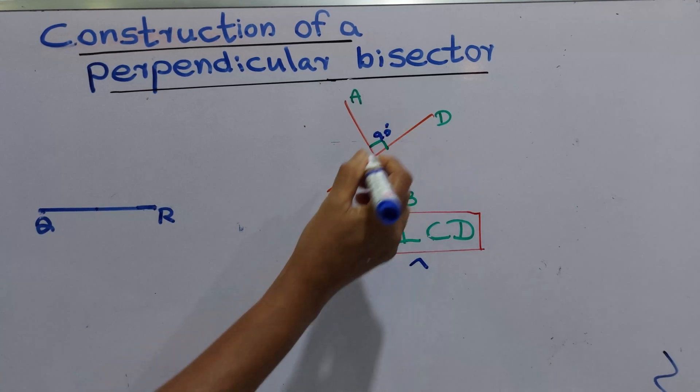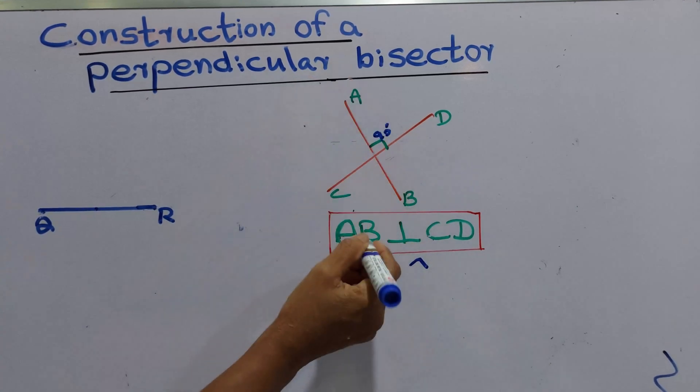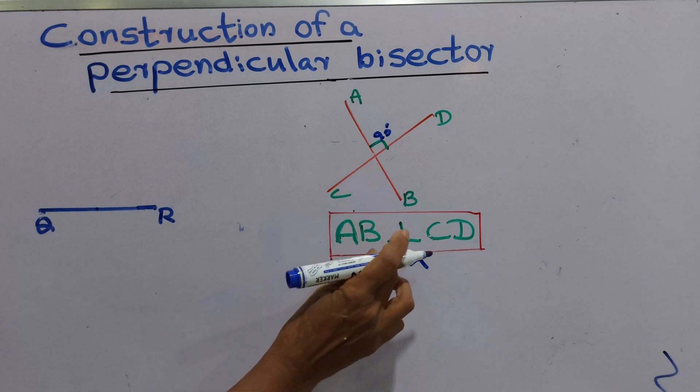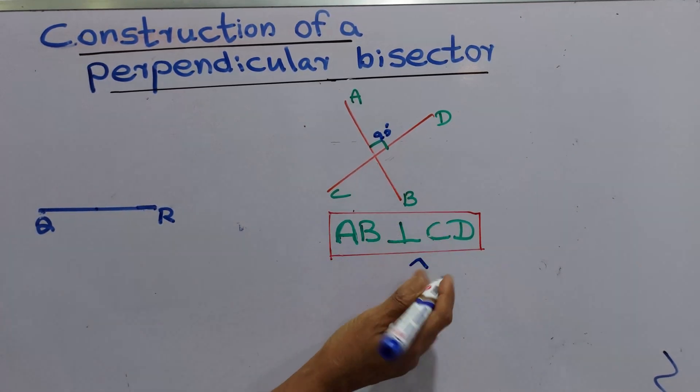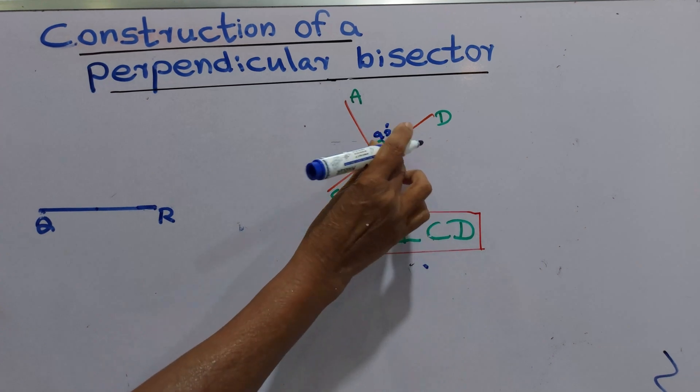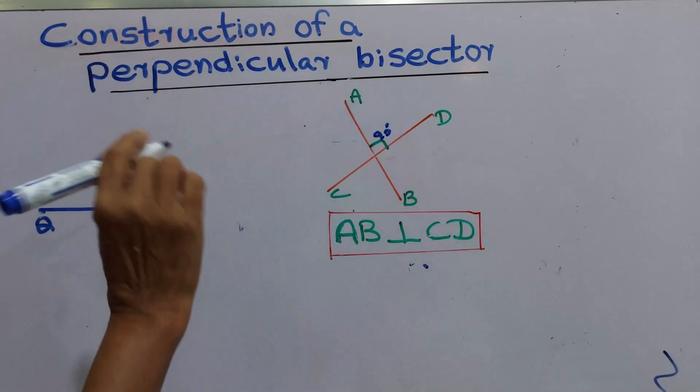We can show a perpendicular line. We can say AB perpendicular to CD. We can show it like this, or we can use this symbol as a right angle. They meet at a right angle.